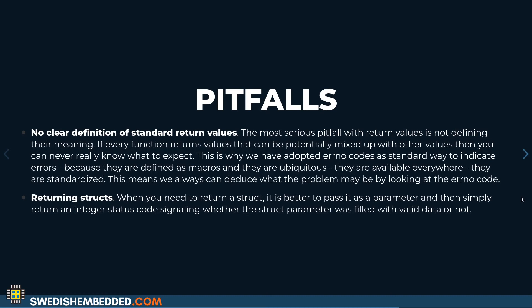One pitfall is not having a clear definition of standard return values — it should always be clear to programmers what the convention is in the project. For example, if you're doing device driver work, EIO is a common return value for IO errors, so make sure you have a standardized set of error codes programmers can refer to. The second pitfall is returning structs. Whenever you need to return complex data, it's usually not correct to return a struct because there's always some possibility the operation can fail — so you should return a status code and place the data into a parameter instead.